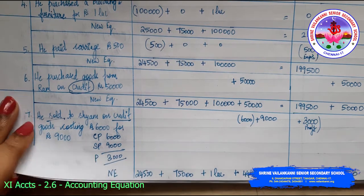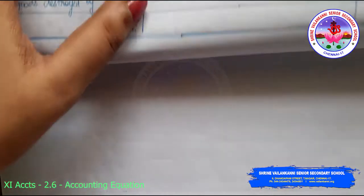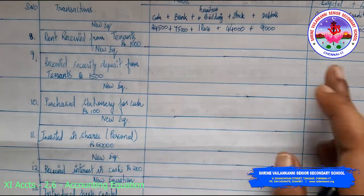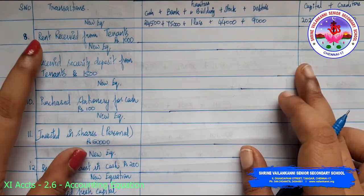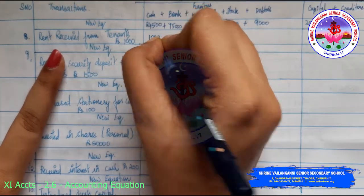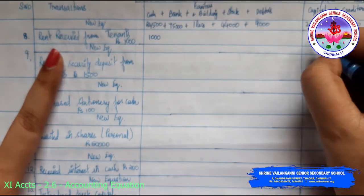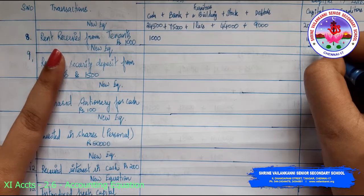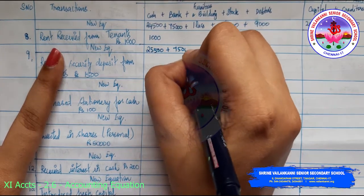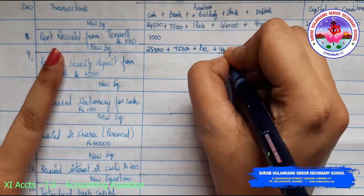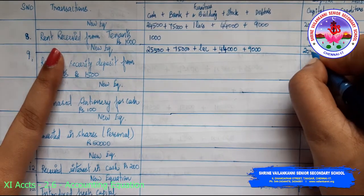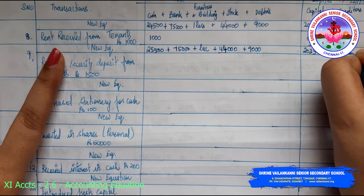I've copied the new equation to the next side. Eighth transaction: rent received from tenant 1,000. Rent is received in the form of cash — it increases the cash value, and since it is income, it will increase the capital. New equation: 25,500 cash plus 75,000 bank plus 1 lakh plus 44,000 stock plus 9,000 debtors equals 2 lakh 3,500 capital plus 50,000 creditors.